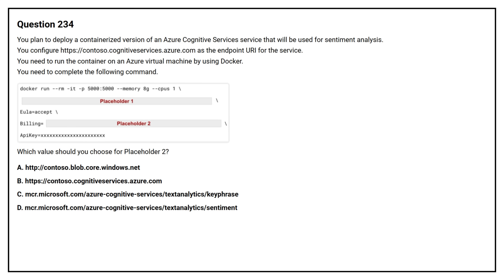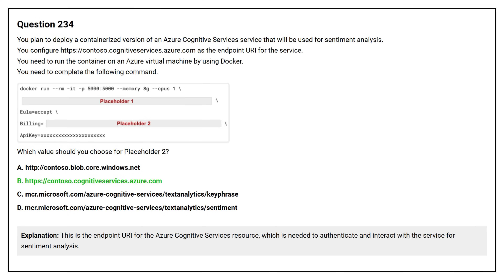Option A, option B, option C, option D. The correct answer is option B. This is the endpoint URI for the Azure Cognitive Services resource, which is needed to authenticate and interact with the service for sentiment analysis.